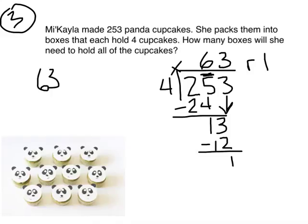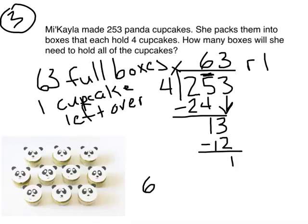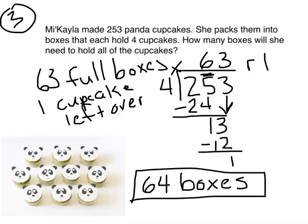What does the sixty-three stand for in this problem? Sixty-three stands for sixty-three full boxes of cupcakes. What does the one stand for? It stands for one cupcake left over. So, if Mikayla wants to hold all of her cupcakes in boxes, sixty-three won't work — there would still be one left over. I have to add one more box to hold that leftover cupcake. So the answer is sixty-four boxes. Remember, when solving problems like this, I can either keep my quotient, use my remainder, or add one to my quotient.